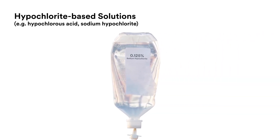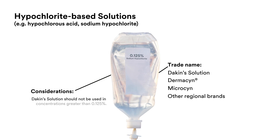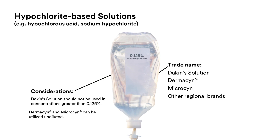Hypochlorite-based solutions such as hypochlorous acid and sodium hypochlorite are typically used in low concentrations. Consider using the fewest irrigation cycles and minimizing soak time to the lowest level that is clinically relevant as determined by the clinician.